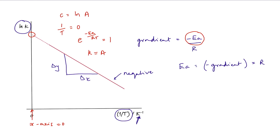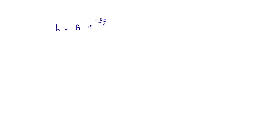Finding the activation energy for a reaction using the Arrhenius equation is a really common exam question. You need to know the Arrhenius equation: K equals A times e to the power of minus Ea over RT. You need to be able to convert it into the form of a straight line graph: ln K equals ln A plus minus Ea over R times 1 over T.